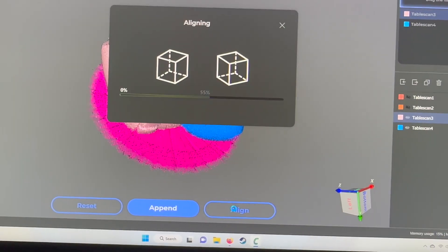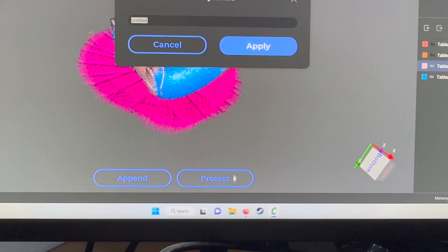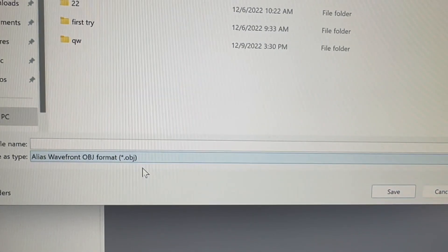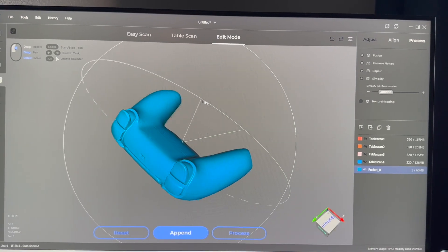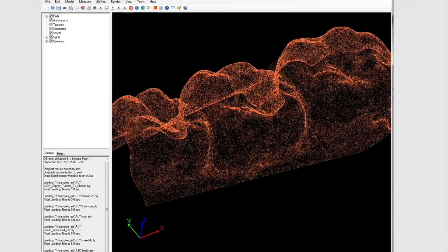You can then align the different scans you've done and then the Creality software will automatically clean up your mesh when you export it as either an OBJ or an STL. As someone who's had to manually clean up point cloud data before, I'm pretty grateful it just does that.